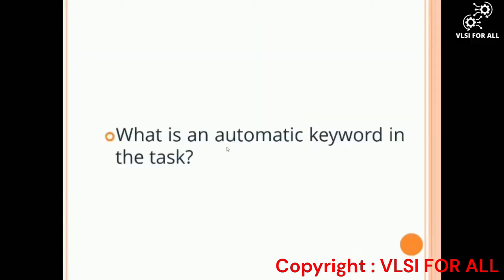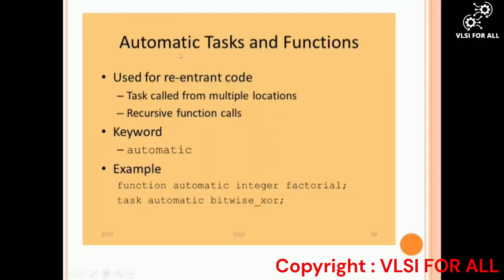Our second question is: what is the automatic keyword in a task? The automatic keyword is used for tasks as well as functions. It is used for re-entering the code, which means re-usability — you can use it at multiple locations for task calls. The automatic keyword is also used in functions for recursive function calls.